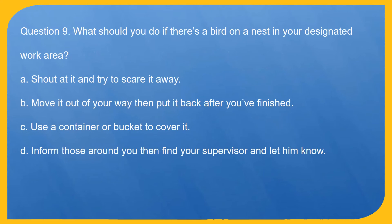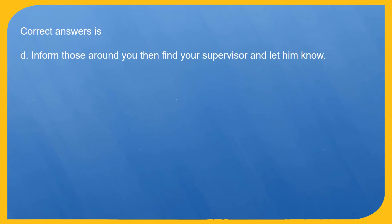Question 9. What should you do if there's a bird on a nest in your designated work area? A. Shout at it and try to scare it away. B. Move it out of your way then put it back after you've finished. C. Use a container or bucket to cover it. D. Inform those around you then find your supervisor and let him know. Correct answer is D. Inform those around you then find your supervisor and let him know.